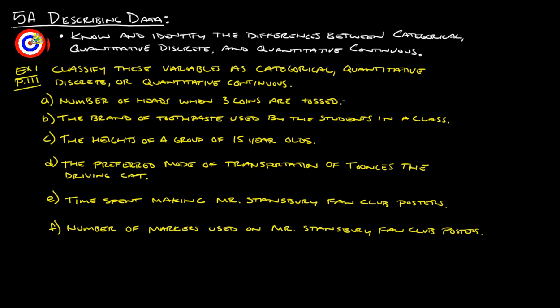Number of heads when three coins are tossed. That is not a category, so it's got to be quantitative discrete or continuous. Since you can actually count the number of heads when three coins are tossed, that is considered quantitative discrete.